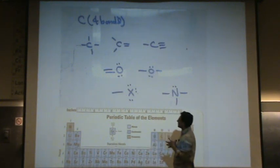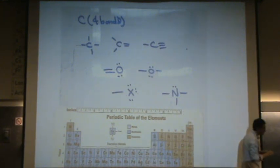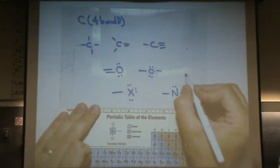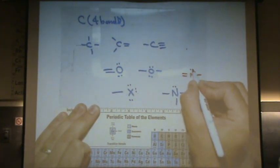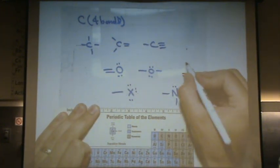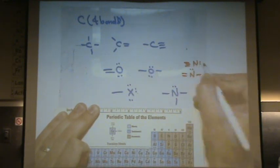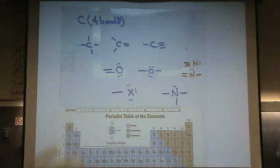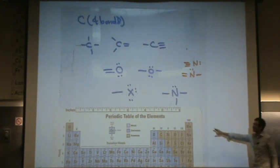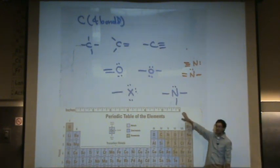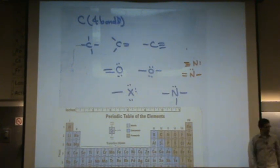Nitrogen can also have double and triple bonds, so you could see it look like this or this. It's a little less common in organic chemistry — something to keep in your mind, but you're not going to see it as commonly.